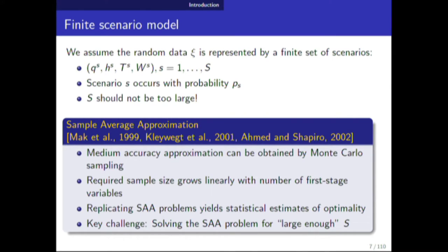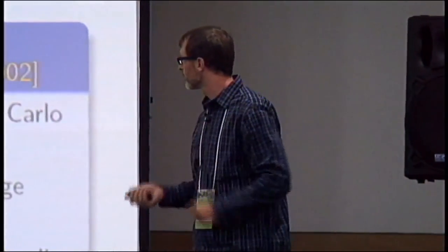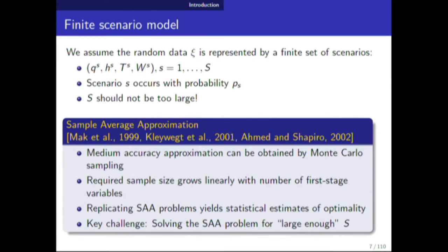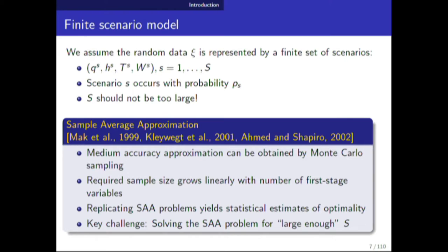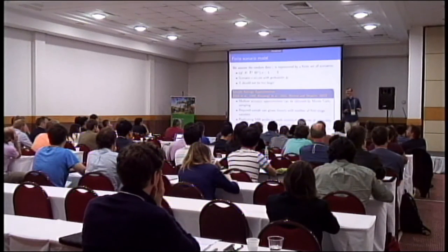Working with a finite list of scenarios also lets you get statistical estimates of optimality — you can repeat the experiment many times and get after-the-fact estimates of solution quality. The key challenge is to solve these SAA problems. You need the sample size large enough for accurate solutions, but then you get a large-scale integer program. We'll focus on how to solve those problems.